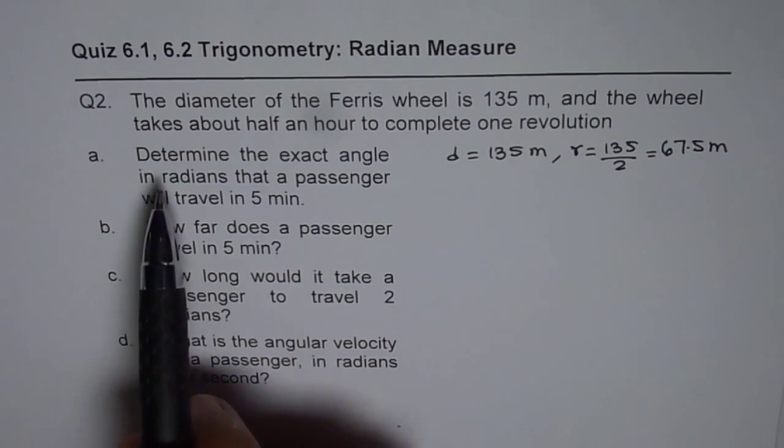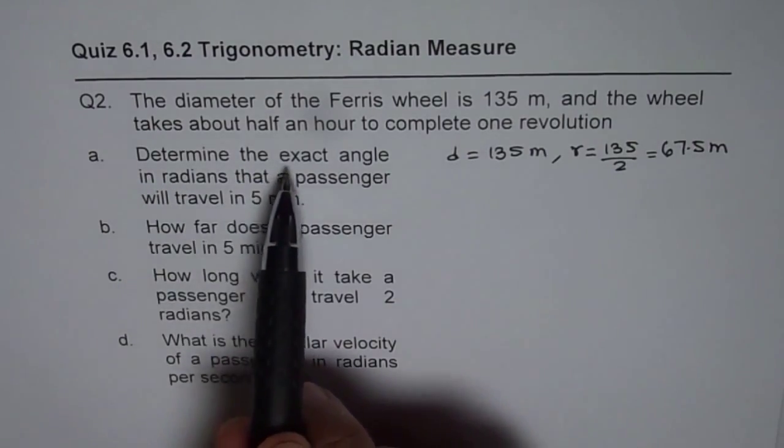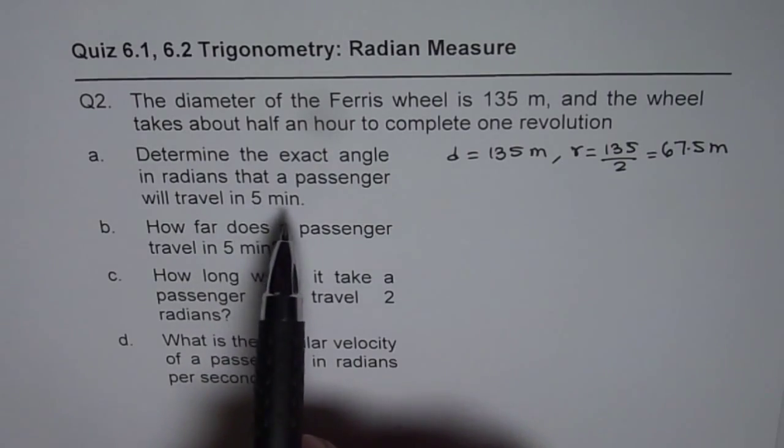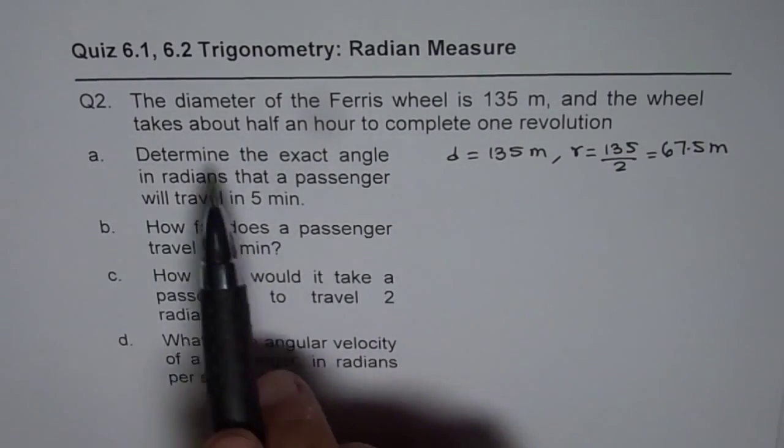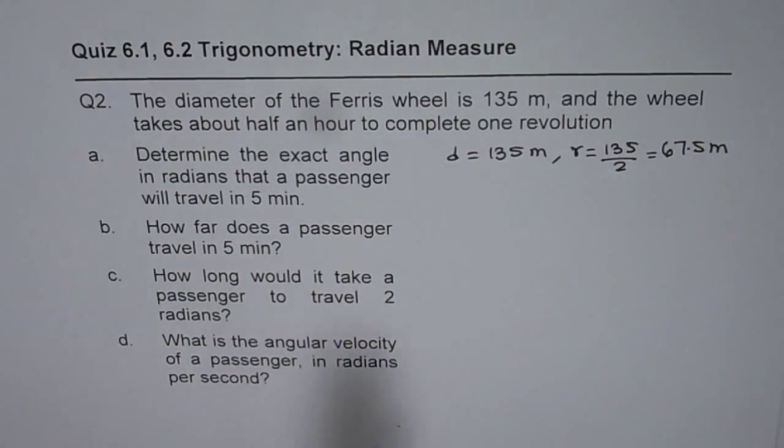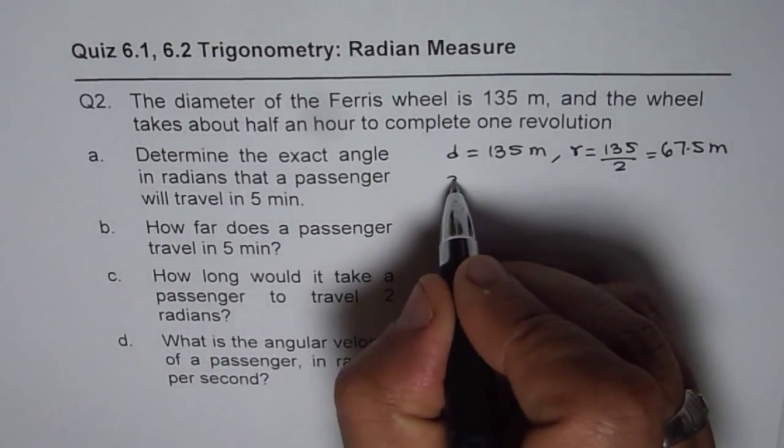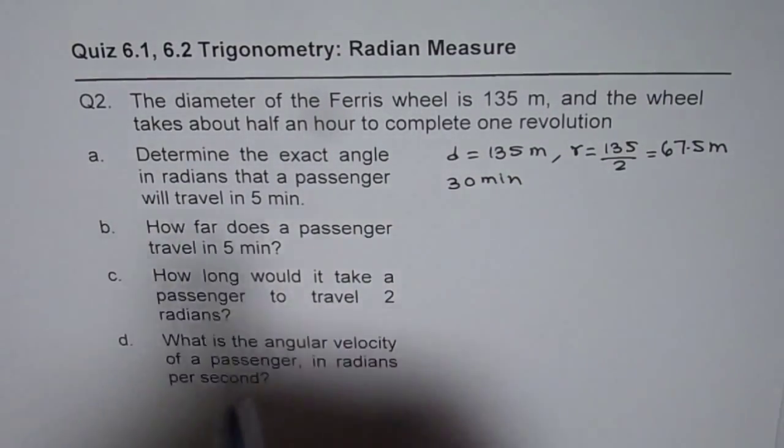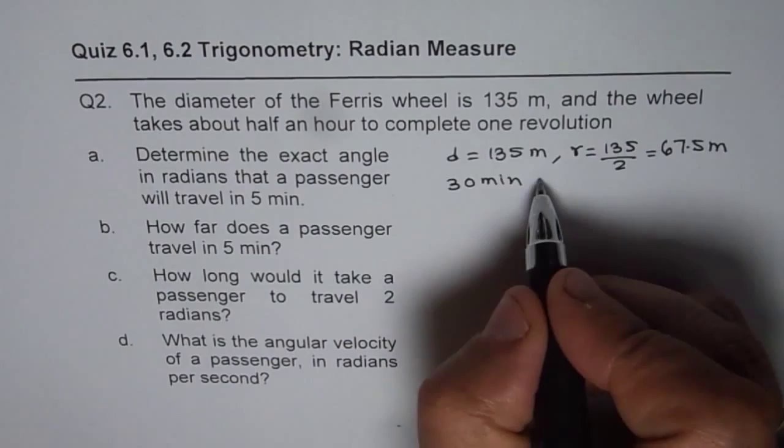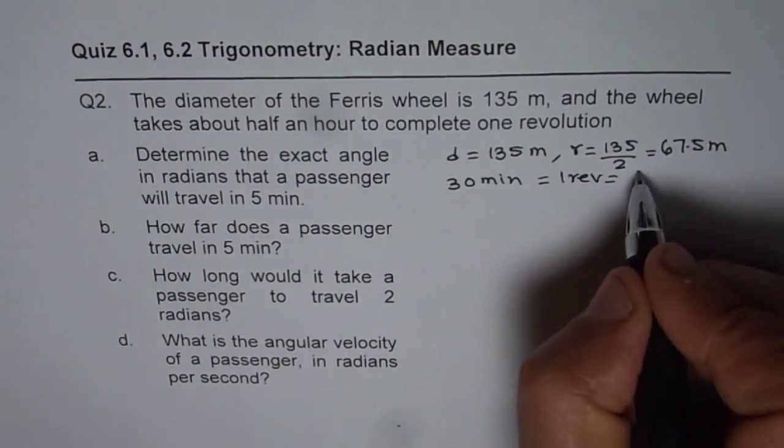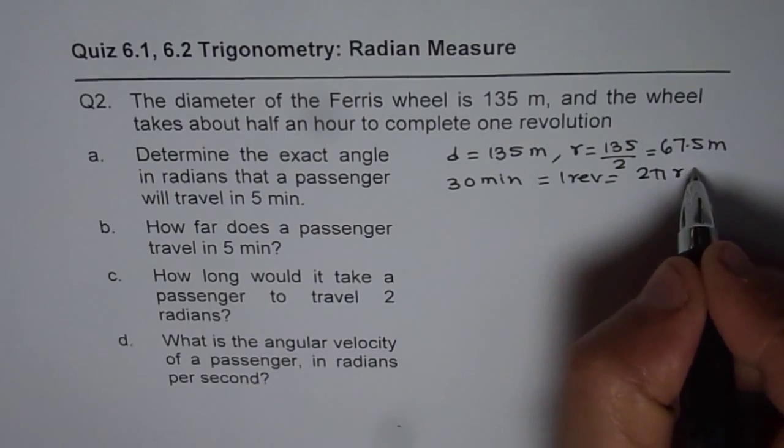Now we need to find exact angle in radians that a passenger will travel in five minutes. This Ferris wheel takes about half an hour to complete one revolution. So in 30 minutes we need to find exact radian angle. In 30 minutes it goes through one revolution. Now one revolution is 2π radians.